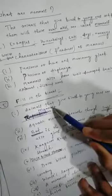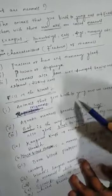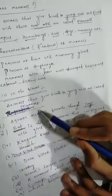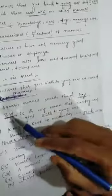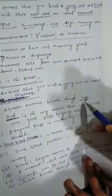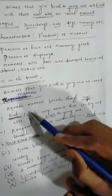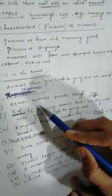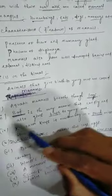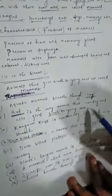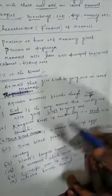Number five: Fill in the blanks. First: Animals that give birth to young ones are called mammals. Second: Aquatic mammals breathe through lungs. That means aquatic mammals like blue whale, dolphin. Third: Bat is the only mammal that can fly and also give birth to young ones.